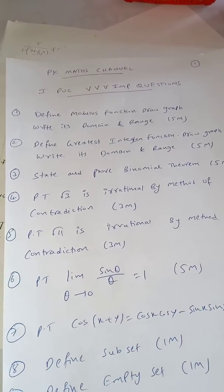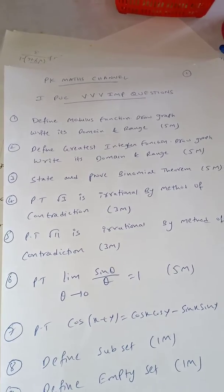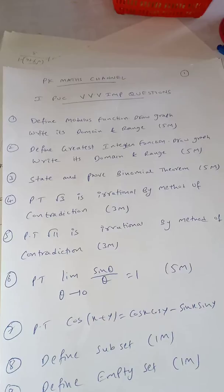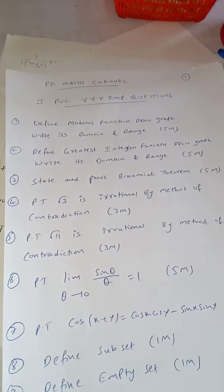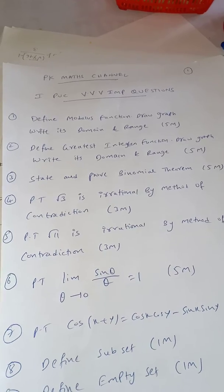Question number 6, limit theta tends to 0, sin theta by theta is 1. Sometimes they can give limit x tends to 0, sin x by x, limit a tends to 0, sin a by a equal to 1. It is a limits and derivatives question. It is also for 5 marks.